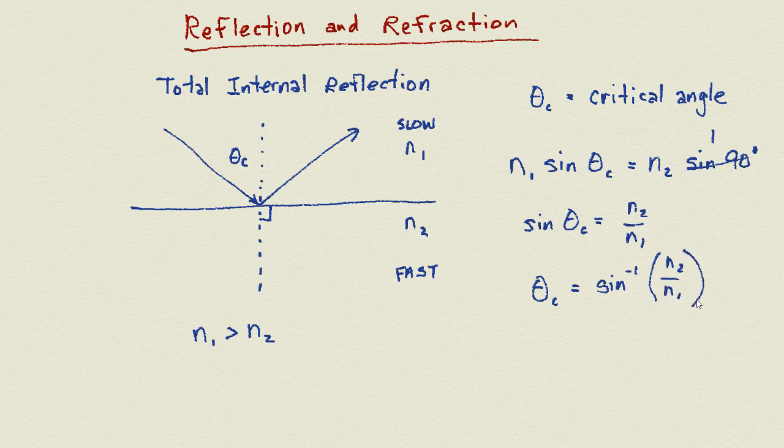And if you ever get confused and you don't know which one is n2 and n1, just know that your calculator will give you an error if you get it backwards. You cannot have an inverse sine of a number bigger than one. So n2 has to be smaller than n1 for this to work.